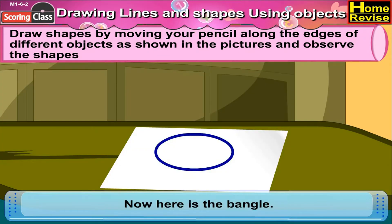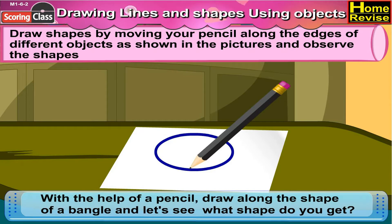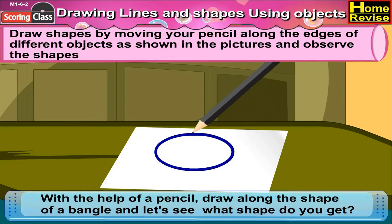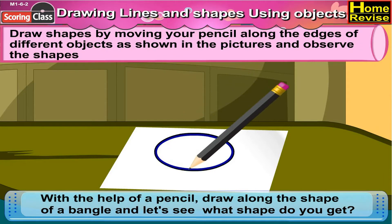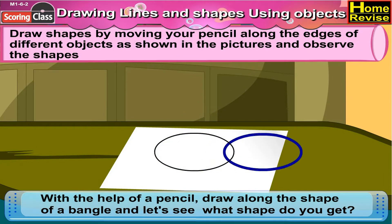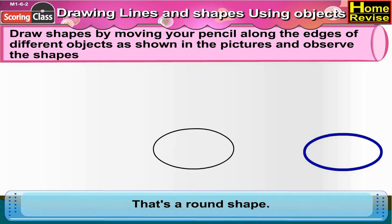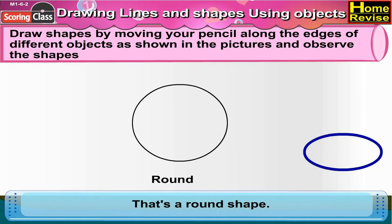Now here is a bangle. With the help of a pencil, draw along the shape of the bangle and let's see what shape you get. Now that's a round shape.